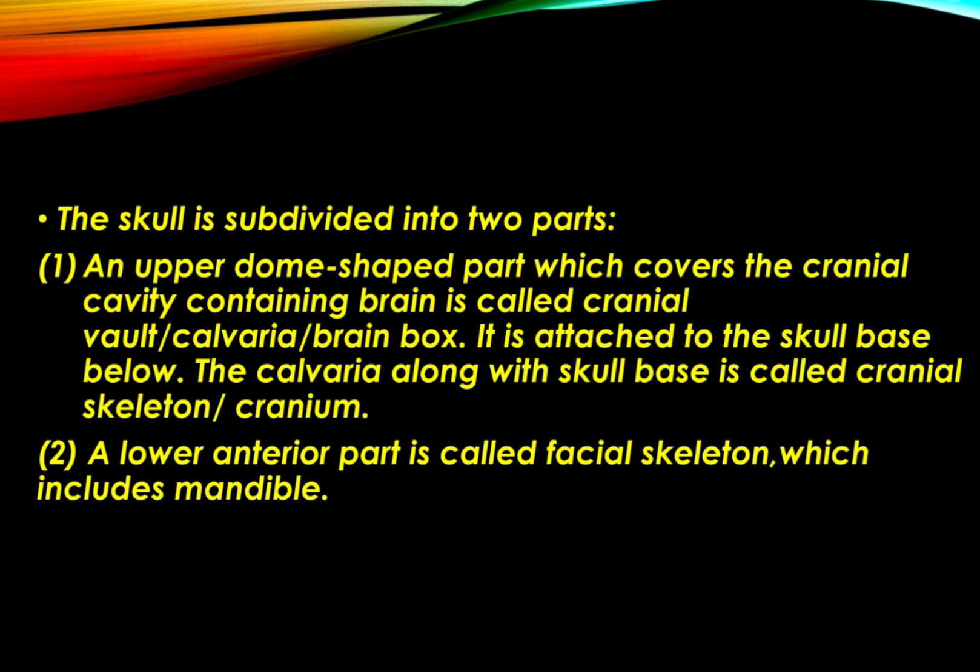The skull is subdivided into two parts. The upper dome-shaped part, which covers the cranial cavity containing the brain, is called the cranial vault, calvaria, or brain box. It is attached to the skull base below. The calvaria along with the skull base is called the cranial skeleton or cranium.